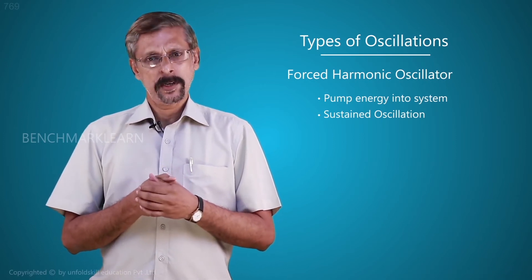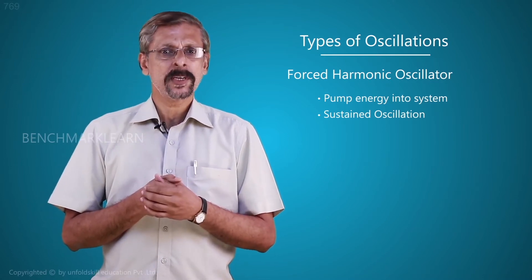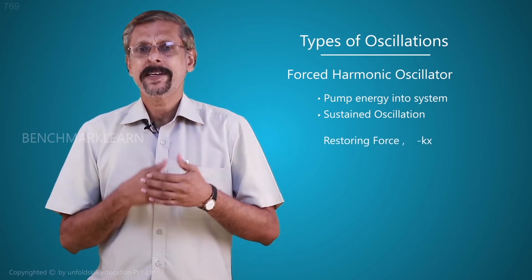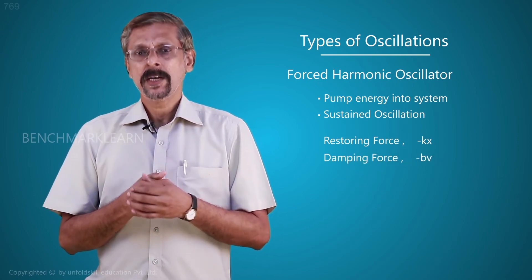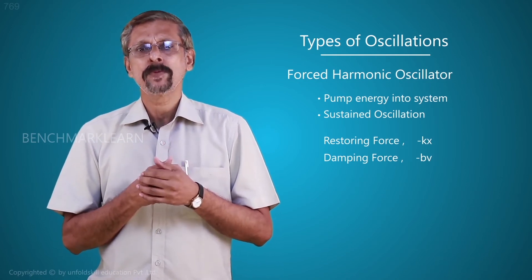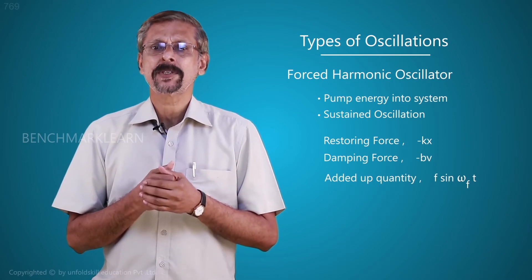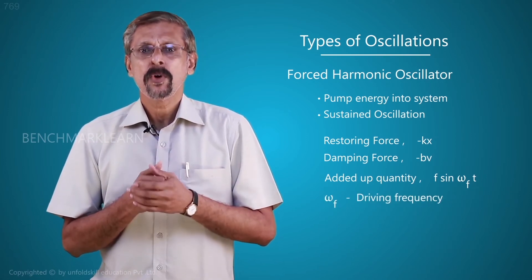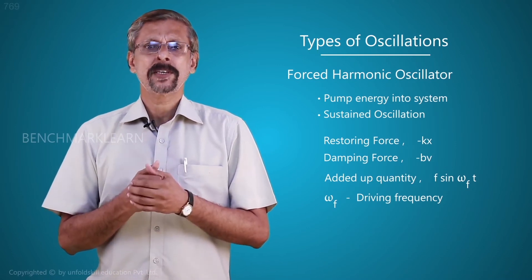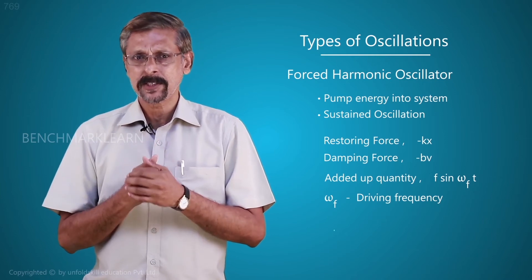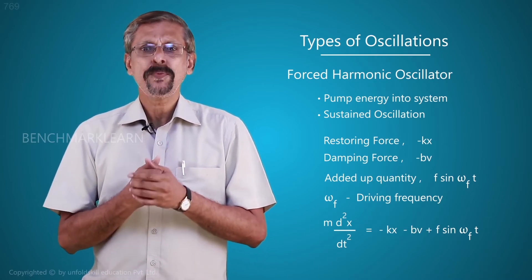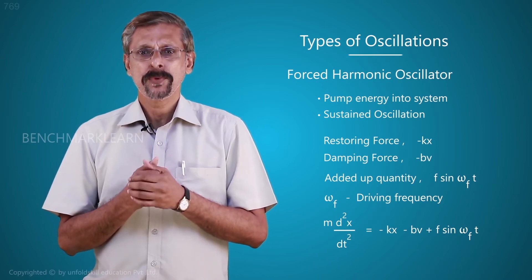In a damped harmonic oscillator, there are two terms pulling it backwards: the restoring force given as minus kx, and the damping force given by minus bv. In the case of a forced harmonic oscillator, another term is added, represented by F sine omega_f t, where omega_f is known as the driving frequency or the imposed frequency.